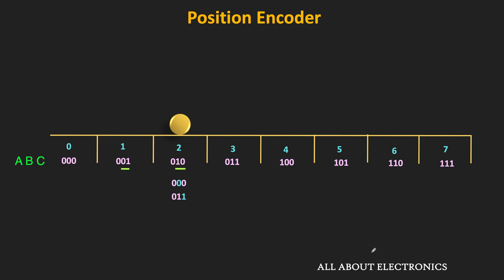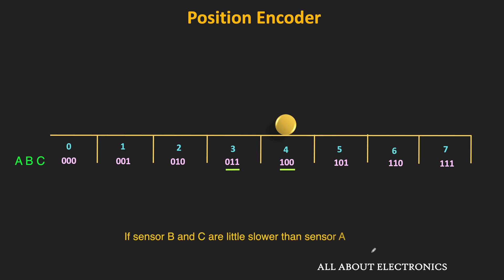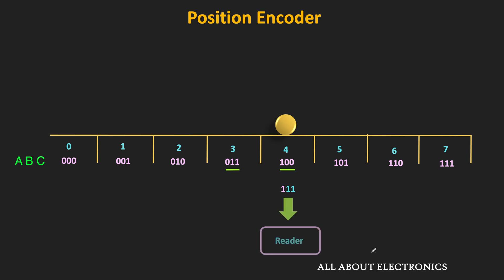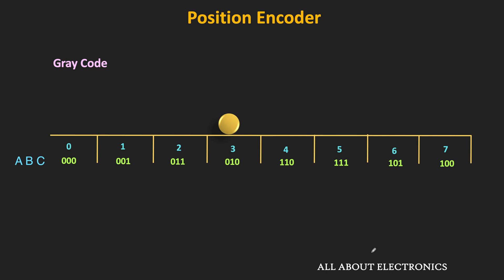This error is even more prominent when the object moves from zone 3 to zone 4, because all 3 sensors change simultaneously. If sensors B and C are a little slower than sensor A, momentarily the output becomes 111, which represents zone 7. If the reader reads the output at that moment, it interprets the data as if the object has moved from zone 3 to zone 7, making the position error significant. But this position error can be minimized if all zones are coded using the gray code. With gray coding, when the object moves from zone 3 to zone 4, only one bit changes — only one sensor switches — and the position error is minimum. That is the biggest advantage of the gray code.